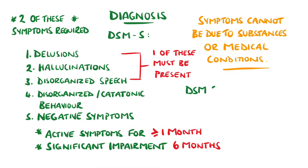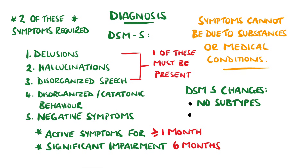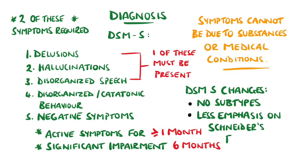Some important changes to note from the DSM-4 are that the subtypes have been removed, as they were not shown to improve the outcome for patients, and less emphasis is placed on Schneider's first rank symptoms of schizophrenia.